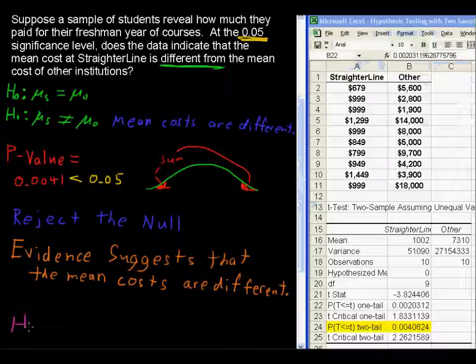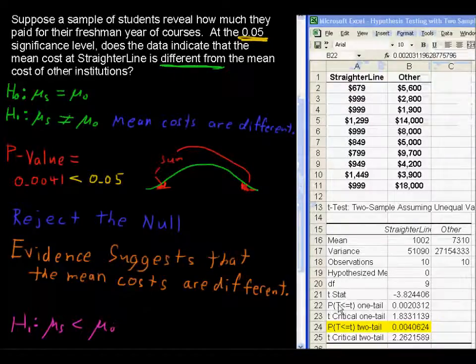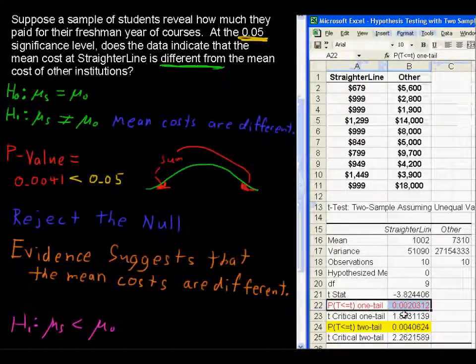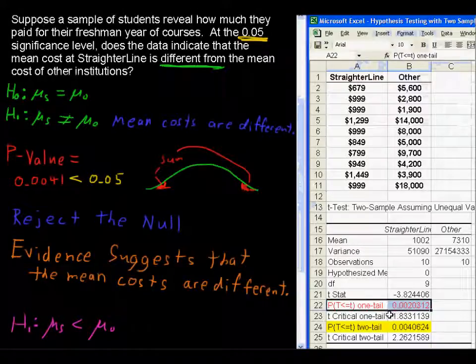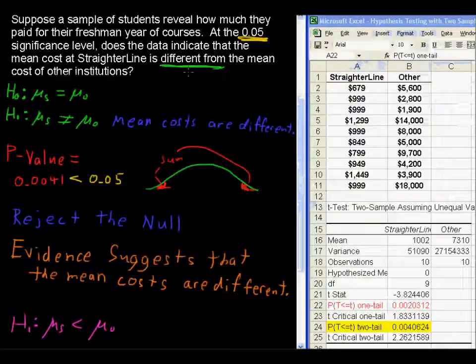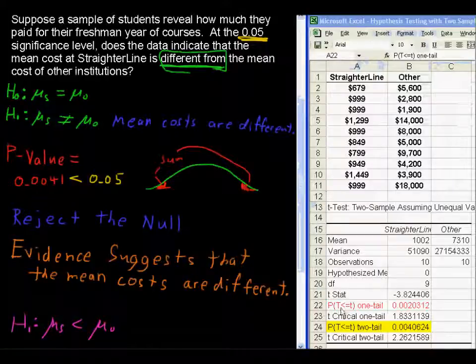By the way, if we were to test the alternative hypothesis, if we were making this hypothesis such that mu sub s is less than mu sub o, then absolutely we would choose this one tail. And it would be 0.002 would be the p-value. And you would go on to reject the null and say that evidence suggests that the mean cost, the StraighterLine, is less than the others. But again, we're staying strict to what is being asked in this question. And so we followed that. And we used the two tail for this example.